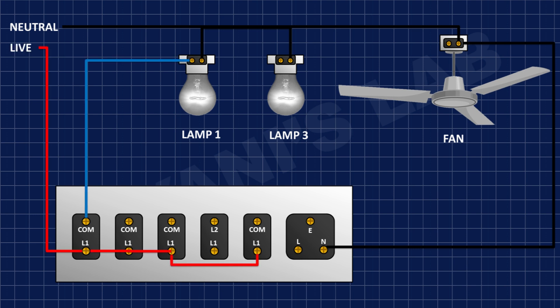After that, I'm going to connect the common pin of the first switch to a pin of the lamp, then the common pin of the second switch to the second lamp, then the common pin of the third switch to the L1 pin of the fan dimmer.